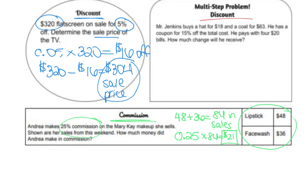The last problem is a multi-step discount problem. Mr. Jenkins buys a hat for $18 and a coat for $63. He has a coupon for 15% off the total cost and pays with four $20 bills. How much change will he receive? First, find his total cost: $18 plus $63 equals $81.